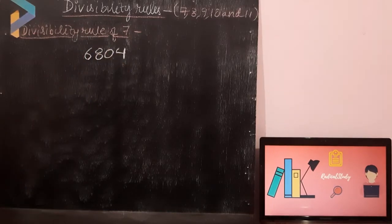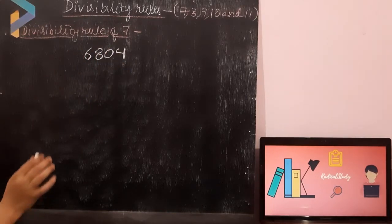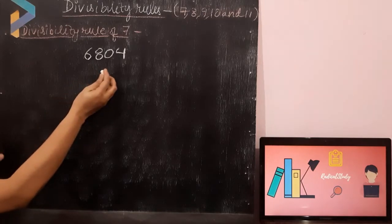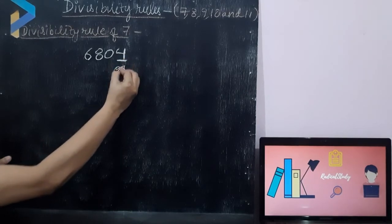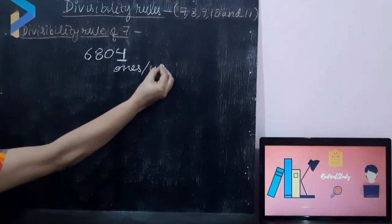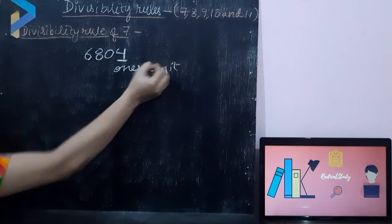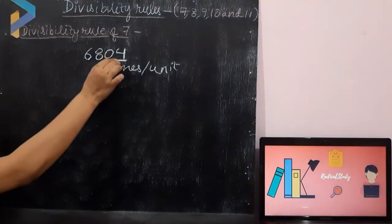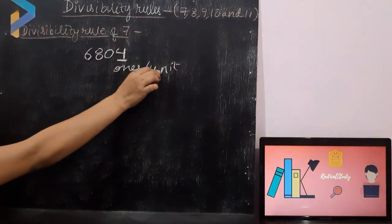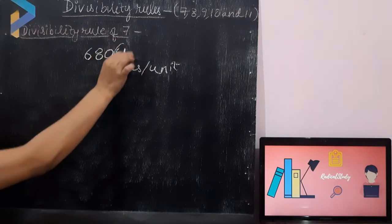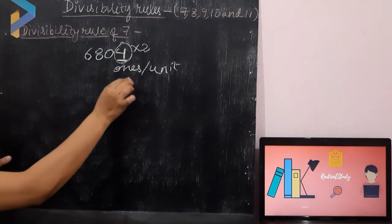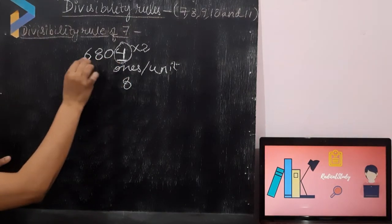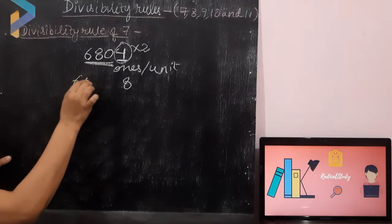The divisibility rule of 7 says that any number is divisible by 7 if the digit at 1's place, or the unit place — both are the same — is doubled. Twice means we multiply it by 2, so it will become 8. Then it is subtracted from the rest of the number. The rest of the number here is 680.